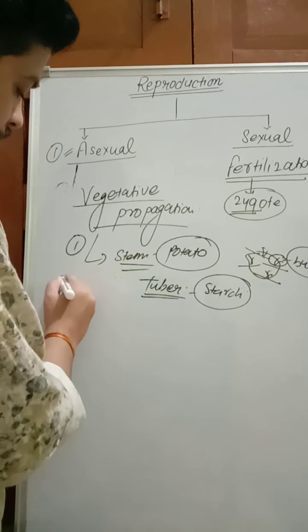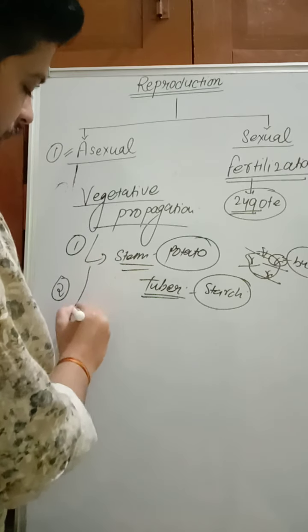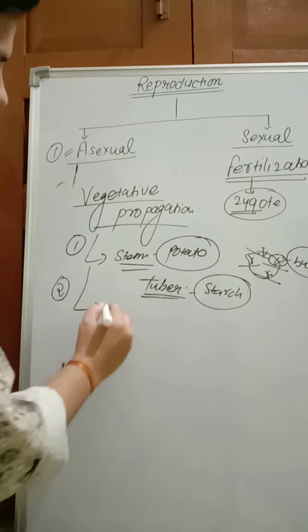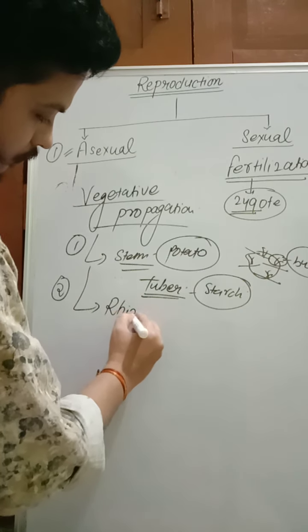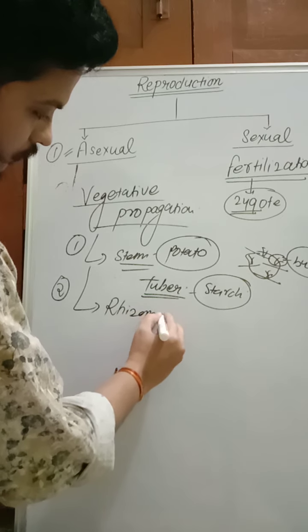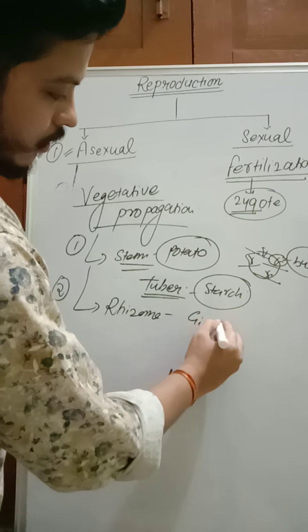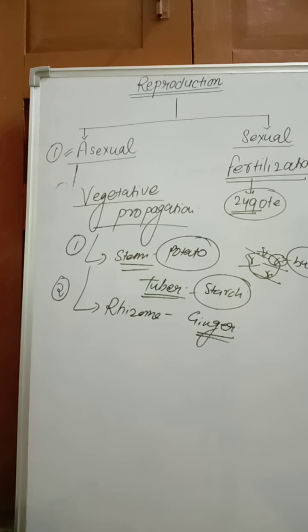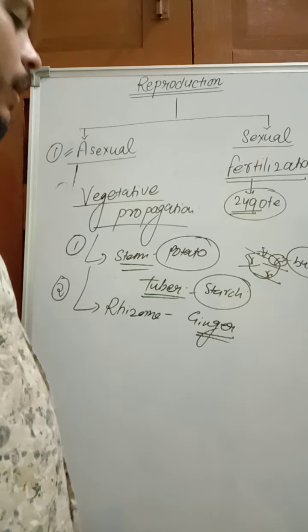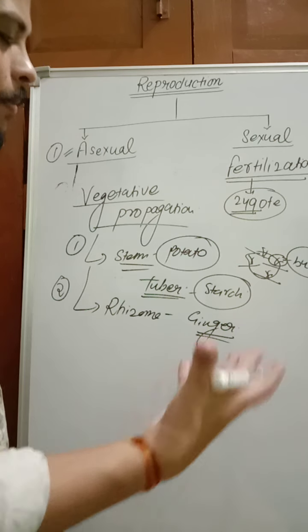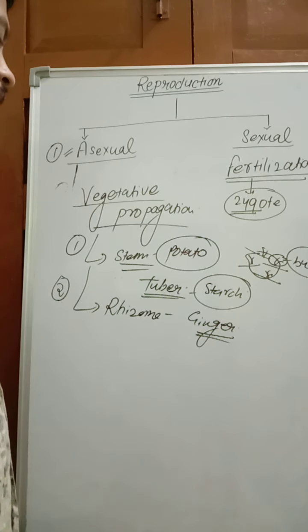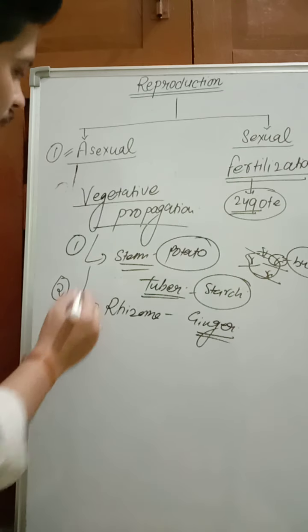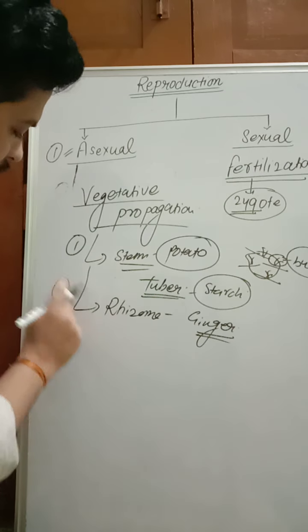Another example of underground stem is rhizome, present in ginger. This is also an example of underground stem. Other examples include bulb in onion, and many more examples of underground stem.